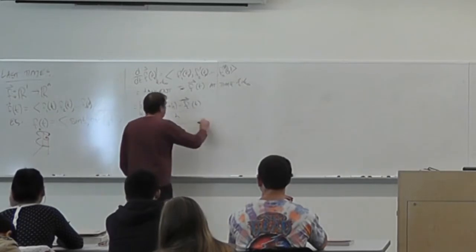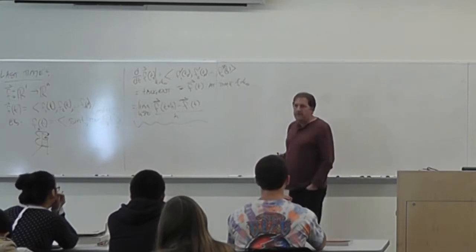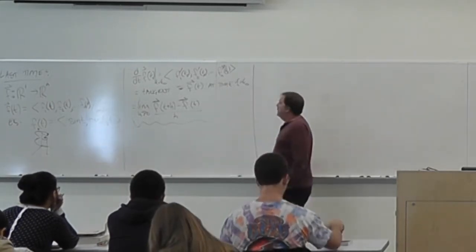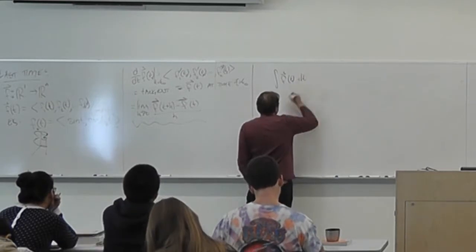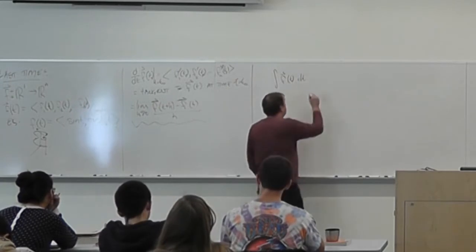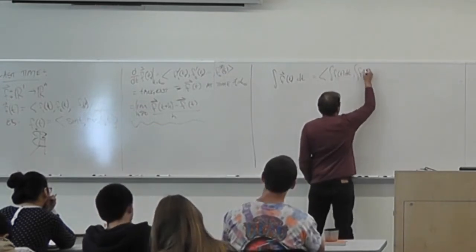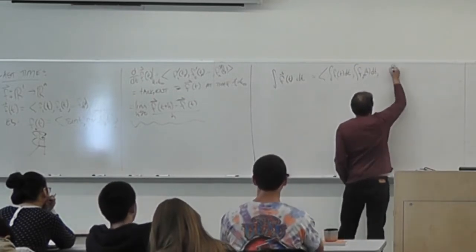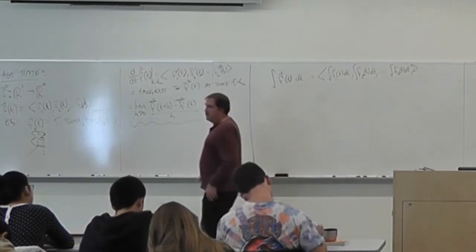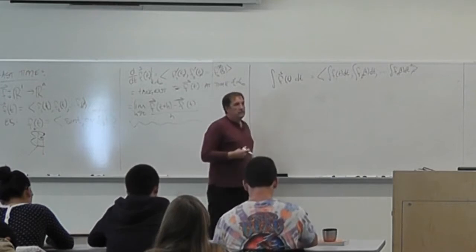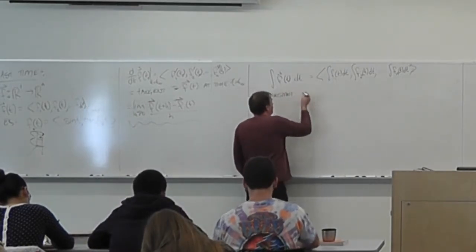What I neglected to do last time — so I want to take a few minutes to do — is: we know about derivatives, let's think about what an integral would be. We can define the integral of this vector-valued function F(t) dt to be the vector consisting of integrating each of the components. We'll get a constant of integration, which will be a vector.